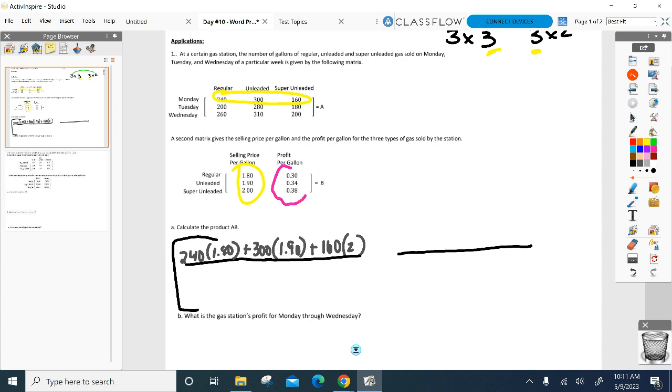So now I'm doing this column right here with it. Alright, what do we got now? 240 again, but now I'm going to multiply it by 0.3. 300 again, but with 0.34, and then 160 again, but now multiplying it with 0.38. Alright, there's your first row. You guys have two more rows to go. Three rows, two columns.